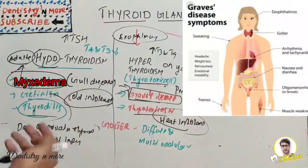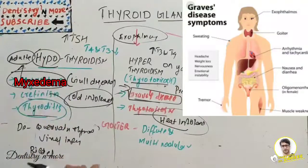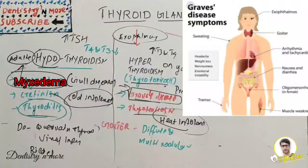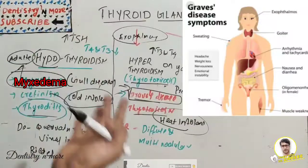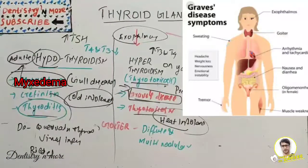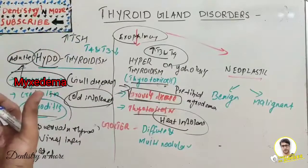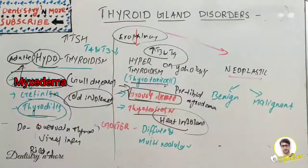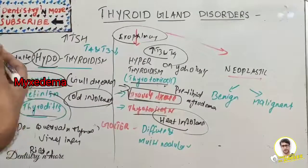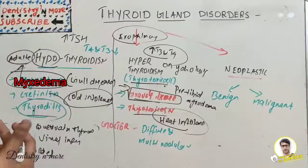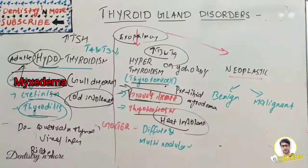In thyrotoxicosis, symptoms include hyperactivity, irritability, heat intolerance, sweating, palpitation, fatigue, weakness, diarrhea, polyuria, sexual dysfunction, tachycardia, and atrial fibrillation, along with exophthalmos and pre-tibial myxedema. Lab findings show increased T3 and T4. Treatment involves reducing thyroid hormone synthesis using radioiodine or by surgical means.